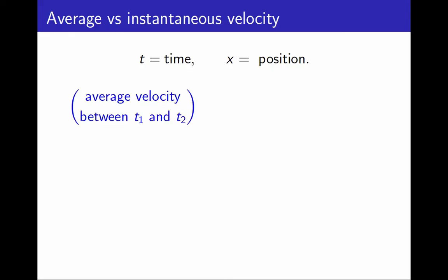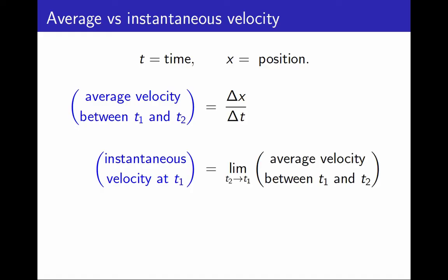The average velocity between two instances, t1 and t2, is easy. It requires no limits. It is the distance travelled, Δx, divided by the time interval, Δt. On the other hand, the instantaneous velocity at t1 is the limit as t2 approaches t1 of the average velocity between t1 and t2. Taking the limit as t2 approaches t1 is the same as taking the limit as the time interval, Δt, approaches 0. And that's the definition.